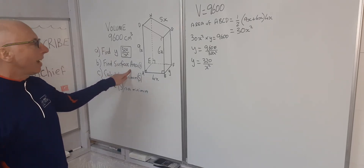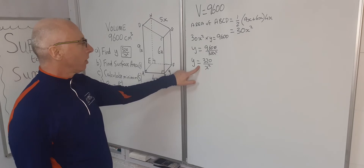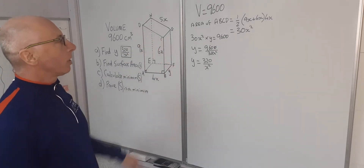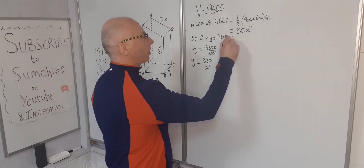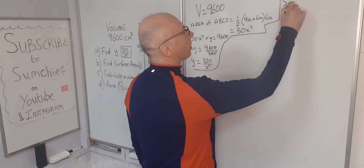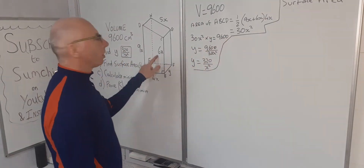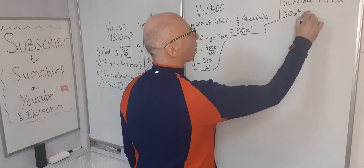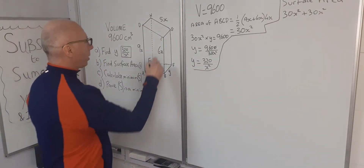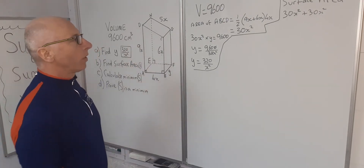Part B is to find the surface area. We need to find all faces, sum them up, and then substitute in the value of y. The front and back faces are the same trapezium, each with area 30x squared, so we write 30x squared plus 30x squared. The prism has six faces. Looking at face CGBF, it has dimensions 6x and y, so that face has area 6xy.